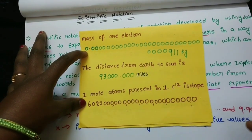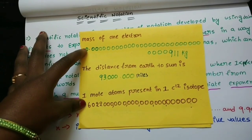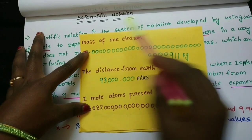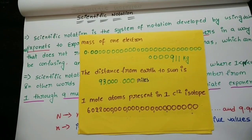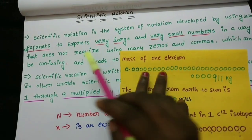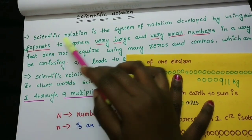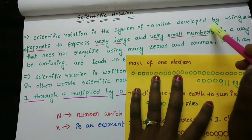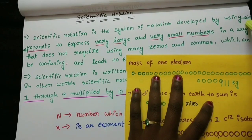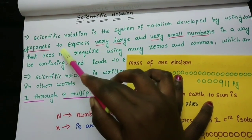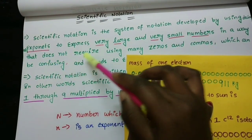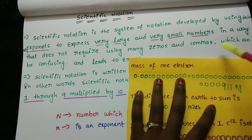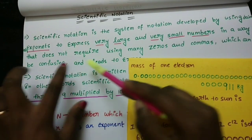We are going to talk about addition, subtraction, and division involving very large and small numbers. Scientific notation is a system of notation developed by using decimals and exponents to express very large and very small numbers in a way that does not require using many zeros and commas, which can be confusing and leads to errors.